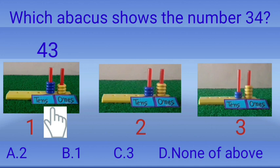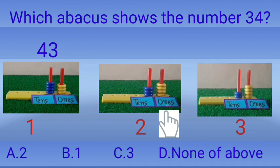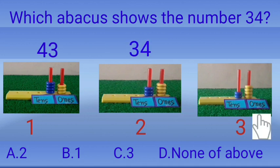Now we will count the beads in the second abacus. Let's count: one, two, three — three beads in tens row; one, two, three, four — four beads in one's row. Second abacus shows the number thirty-four.